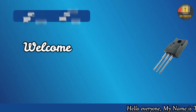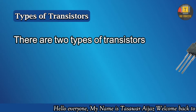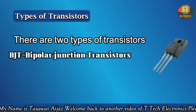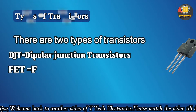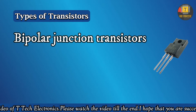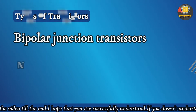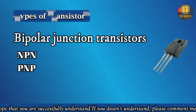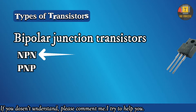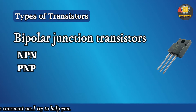Hello friends, welcome to my YouTube channel. In the last video I told you about types of transistors — there are two types: bipolar junction transistor and field effect transistors. We talked about bipolar junction transistor, which has two types: NPN transistor and PNP transistor. I told you about NPN transistor in complete detail with a practical demonstration.